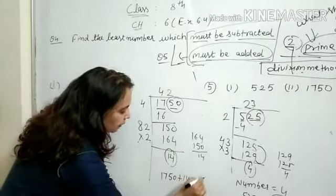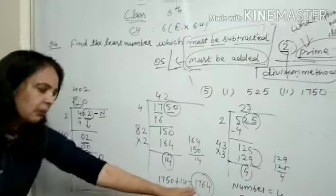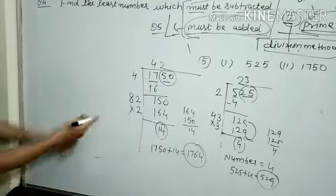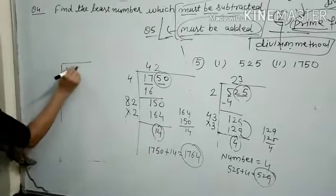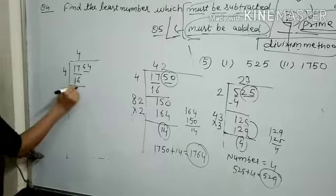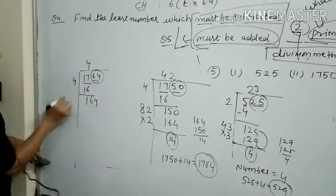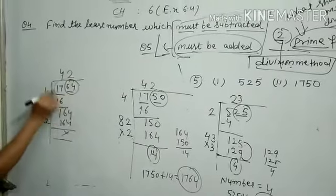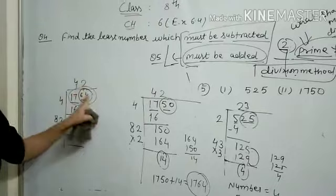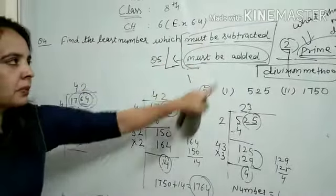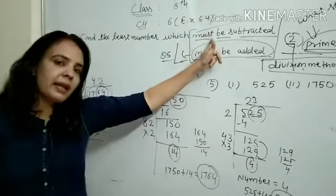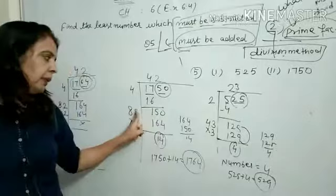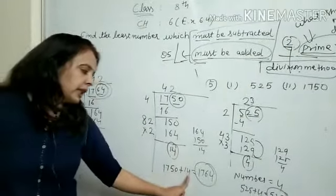Add 14 to 1750: 1750 + 14 = 1764. Check if 1764 is a perfect square. Make pairs of 1764. 4×4=16, remainder 1, bring down 64. Double quotient 4 to get 8. 42×2=84, 48×2=16 — it goes at 2: 82×2=164, remainder 0. So 1764 is a perfect square — it is the square of 42. For subtraction: subtract the remainder; for addition: take one larger digit, reverse-subtract to find what to add.